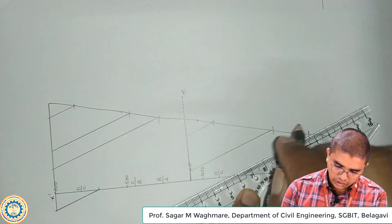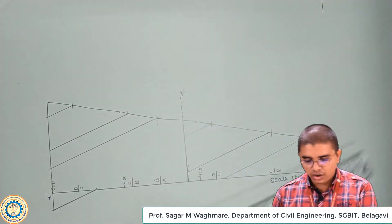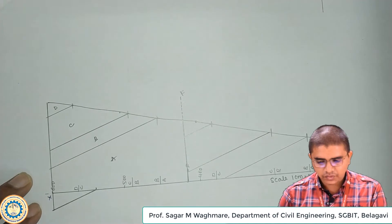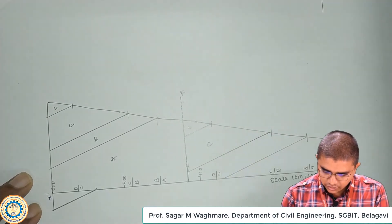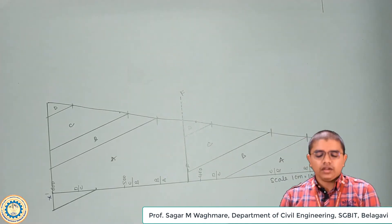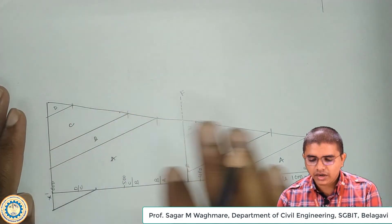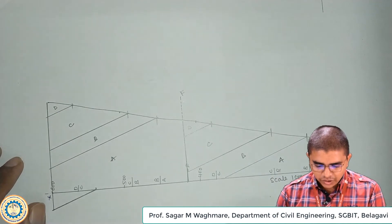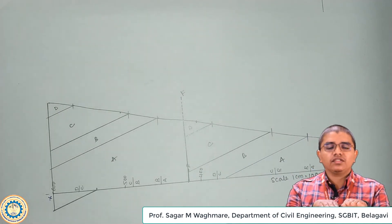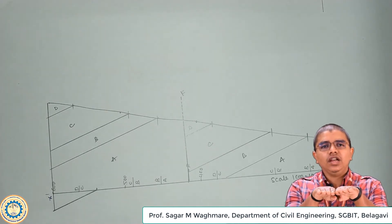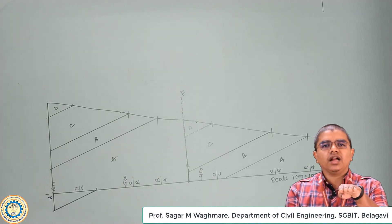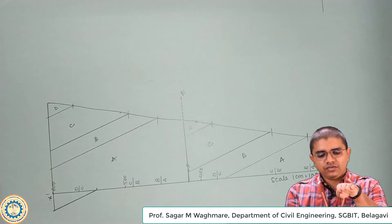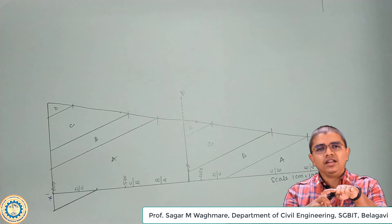I will draw another line over here, completing all the beds. Let us name them: this is D, this is C, this is B, and this is A. Same way on this side, this is D, this is C, this is B, and this is A. With this we understand that there are ABCD beds on both sides, but due to this fault, this repetition of beds is happening. Now we need to understand by how much the beds are displaced — one has remained in the original position and the other has gone down. Understanding that amount is very important.